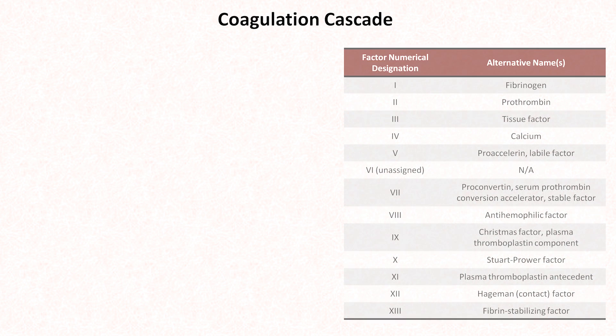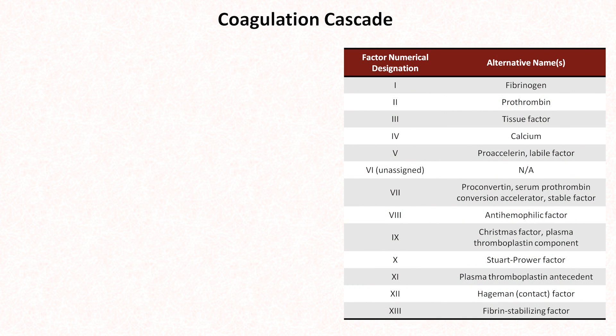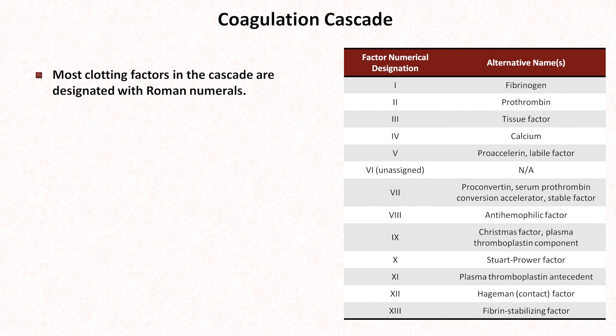We saw this table briefly in the first video of the series. It demonstrates that most clotting factors in the cascade are designated with a roman numeral, in addition to having one or more alternative names. The clotting factors are almost always known by the roman numeral, with the exception of factors one through four, which are always referred to by their names: fibrinogen or fibrin, prothrombin or thrombin, tissue factor, and of course calcium.